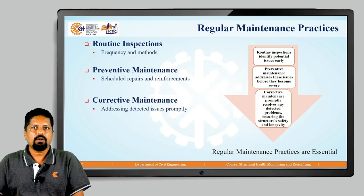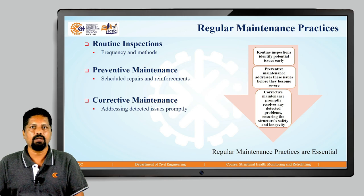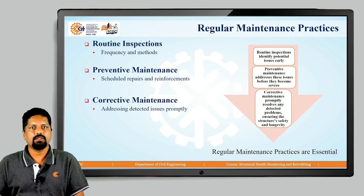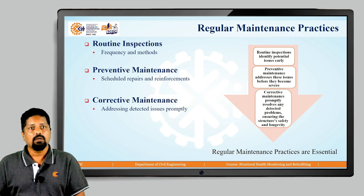The last point covers regular maintenance practices. There are three maintenance patterns: routine inspection, preventive maintenance, and corrective maintenance. In routine inspection, checks are carried out at some frequency using different methods — basically visual inspection and some instruments — to identify potential issues at an early stage. Preventive maintenance involves scheduled repairs and reinforcement of the structure. When early detection occurs, we plan for preventive maintenance to address issues before they become severe — restricting the structure from deteriorating from moderate to severe.